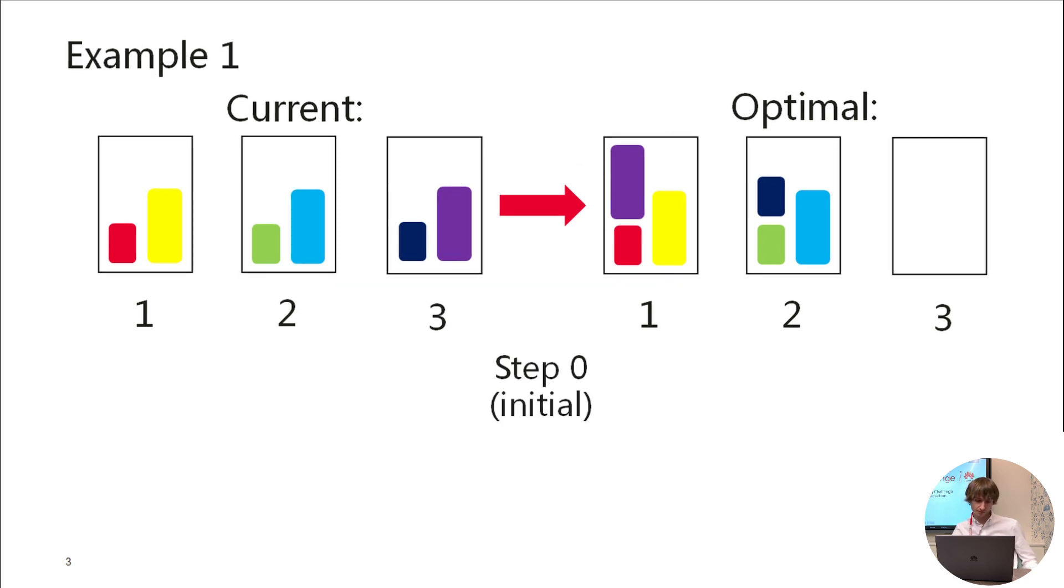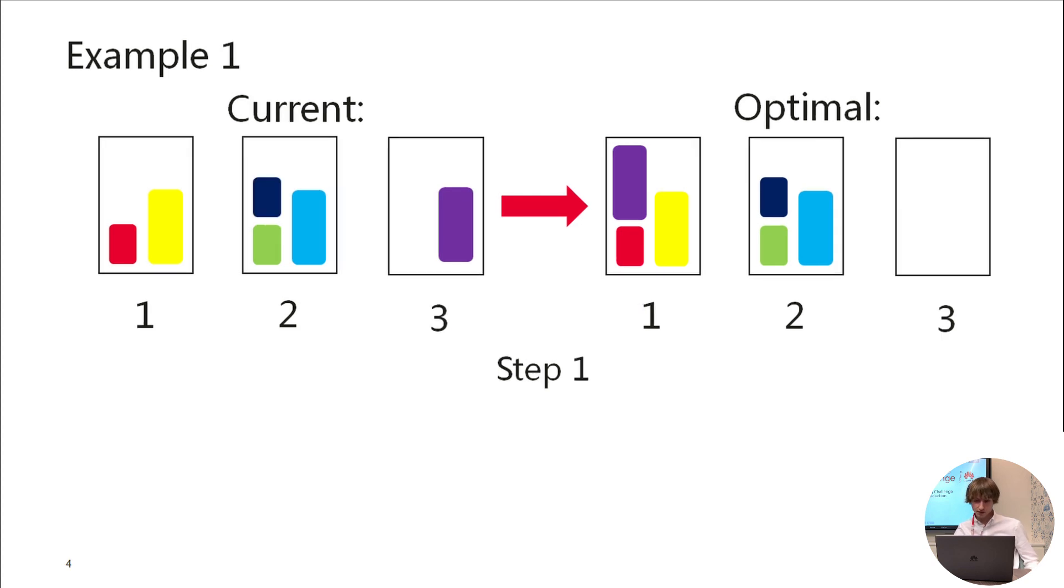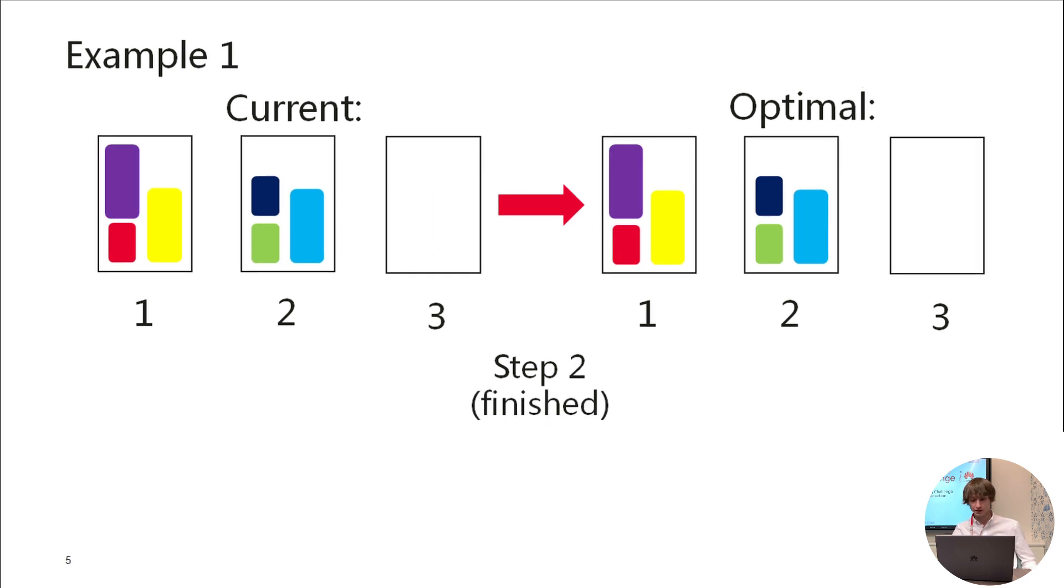Let's see the first example. Here we have three servers initially, and the optimal mapping we need to achieve has only two active servers on the right. Step 0, this is the initial state. We can move this dark blue or navy colored virtual machine from server number 3 to server number 2. Let's do this. Now you can see that we only need to move purple virtual machine from server number 3 to server number 1. Let's do this. Okay, we achieved the final optimal placement in two steps and two migrations.